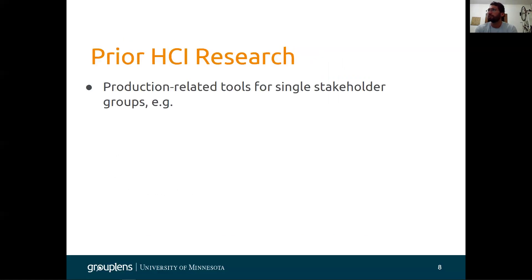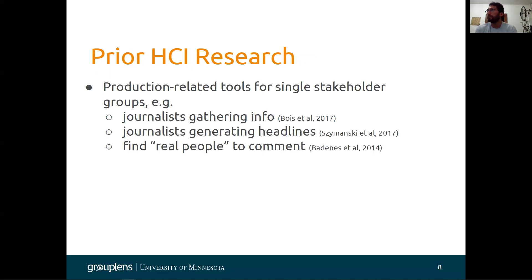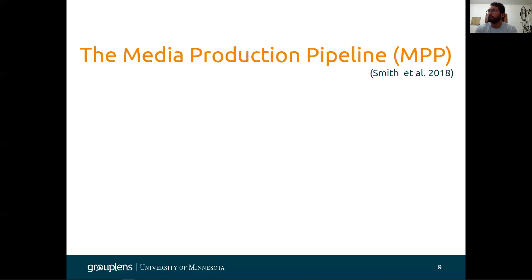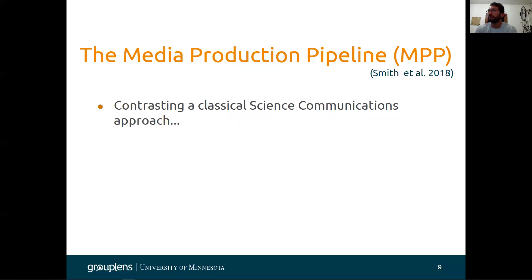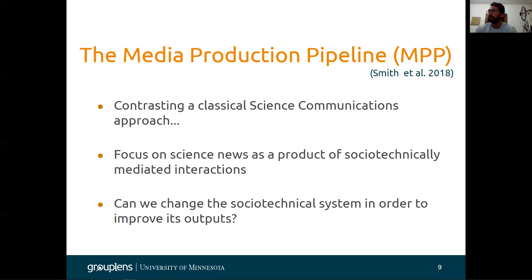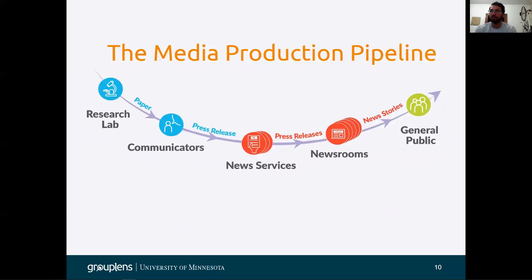Some prior research has focused on production-related tools for single stakeholder groups — for example, journalists gathering info, generating headlines, and finding real people to comment. But this lack of focus on science communication can create very specific problems in how the dissemination of science information is conducted. That is why we use the media production pipeline, contrasting it to the classical science communications approach and focusing on science systems as a product of socially-technically mediated interactions, recognizing how we can change those outputs.